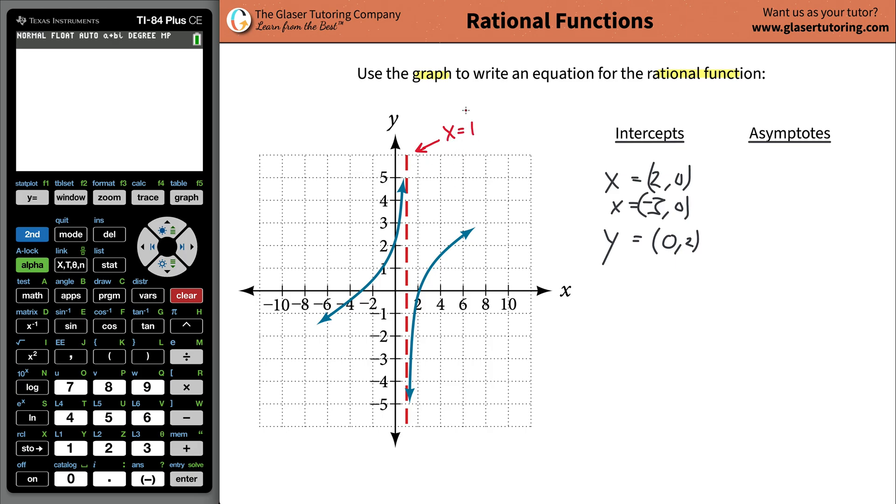Now the vertical asymptote here is going to be X equaling one. Remember, anytime you have a vertical line, it's always X equaling some number. So we have a vertical asymptote at X being equal to one. So we kind of have everything we need to write the function.